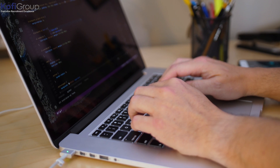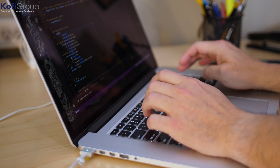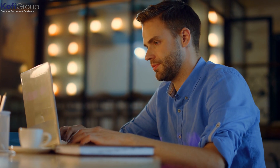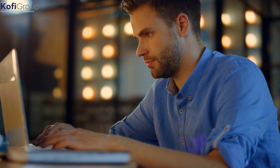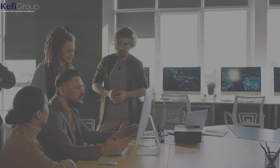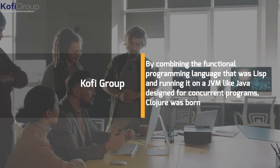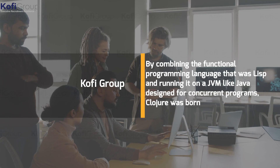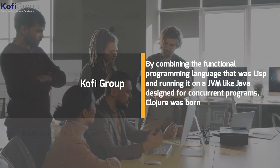In short, Clojure is a Lisp dialect. It was originally designed by Rich Hickey in an attempt to solve the problems he was having when writing situational programs. No matter which programming language he tried, the result was the same — software that required a monumental amount of time and effort just to make relatively small changes to the code. The project was a success, and his team enjoyed working within a framework with immutable data structures and a custom-designed functional library. By combining the functional programming language of Lisp and running it on a JVM like Java, designed for concurrent programs, Clojure was born.